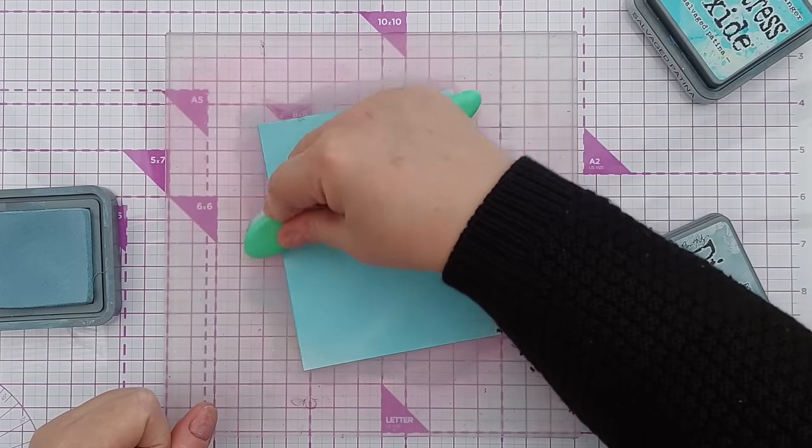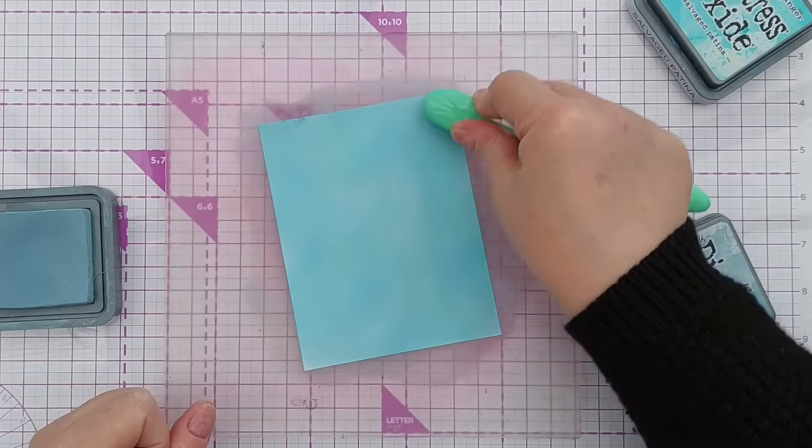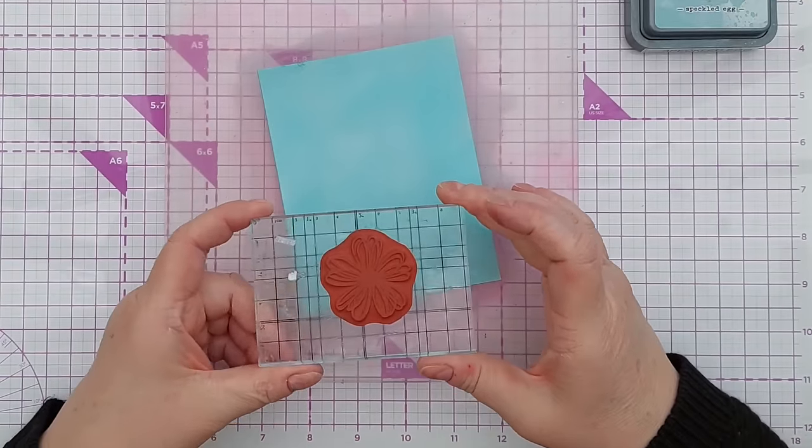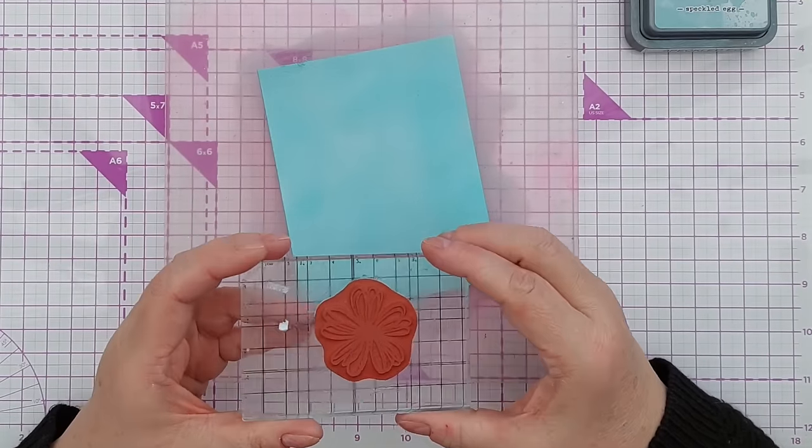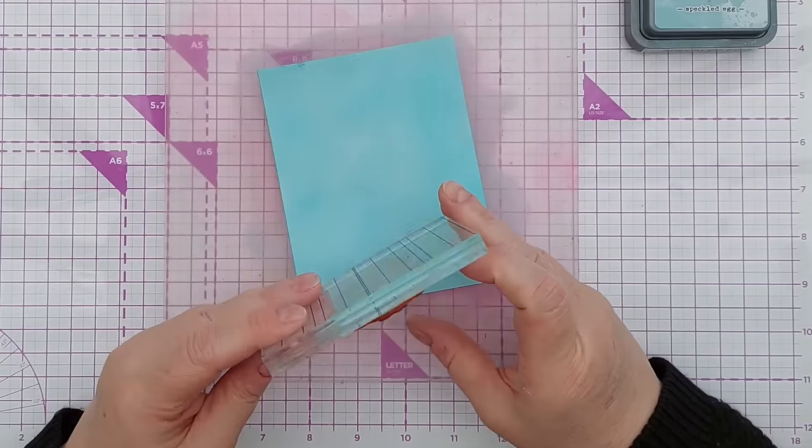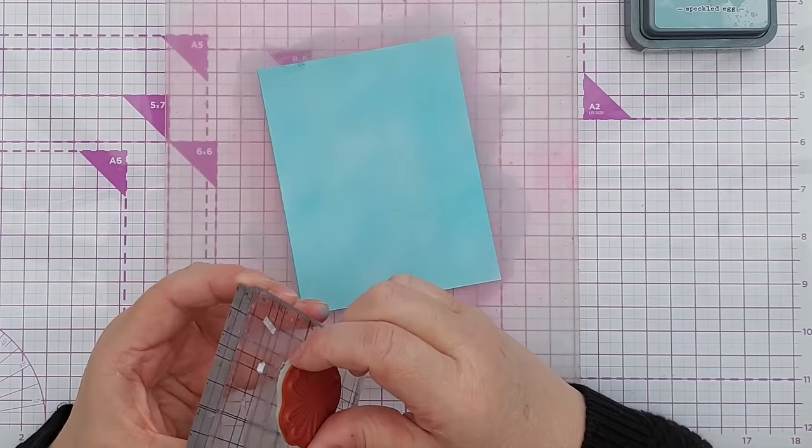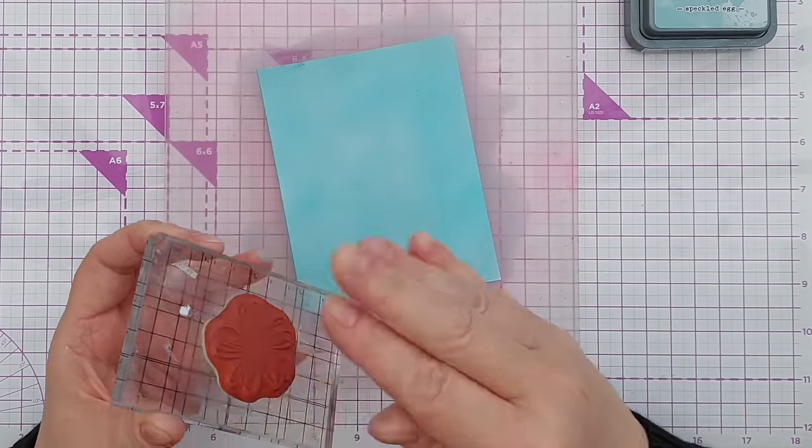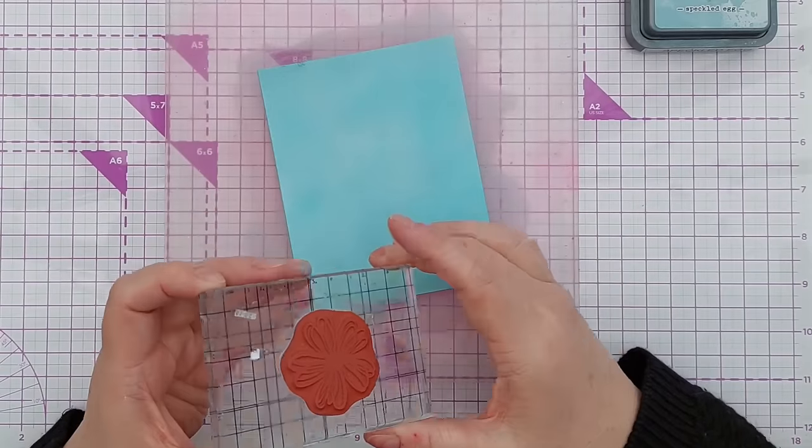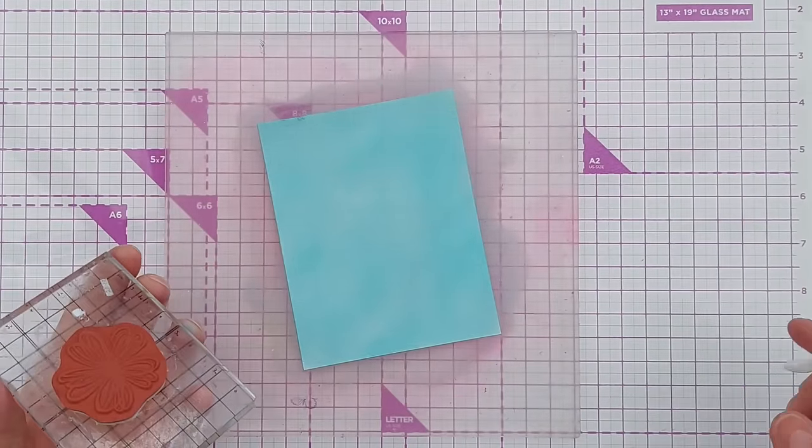The next thing I'm going to do is take this rubber stamp—I think this is an old Stampin' Up stamp—and I've used stick glue to stick it on my acrylic block because it's not sticky on the back.